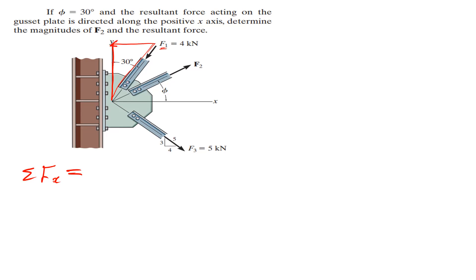Since we have 30 degrees there, we're going to have a negative x-component. So this is going to be negative 4 kilonewtons times sine 30 degrees. Then we also have F2, whose angle phi is given to be 30.